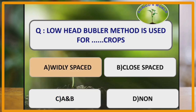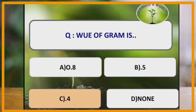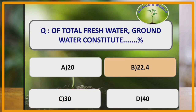Lower head bubbler method is used for widely spaced crops, for example orchard crops. Water use efficiency of gram is 0.4 kg per hectare mm. Of the total fresh water, the groundwater constitutes 22.4%.